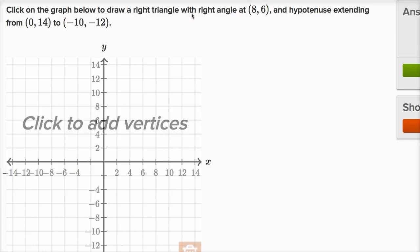Click on the graph below to draw a right triangle with right angle at x equals eight, y equals six, and hypotenuse extending from zero comma 14 to negative 10 comma negative 12. Well, it looks like they've given us the three vertices of the triangle, so we could just plot them.